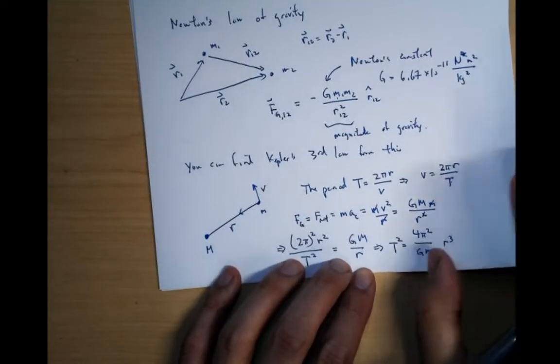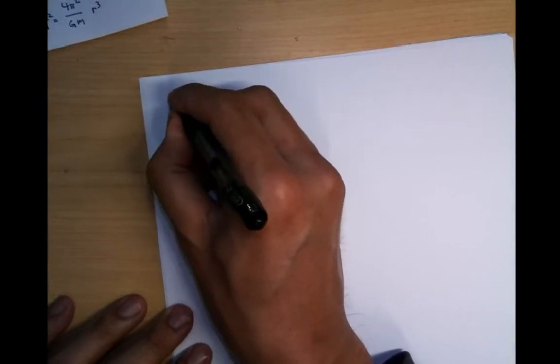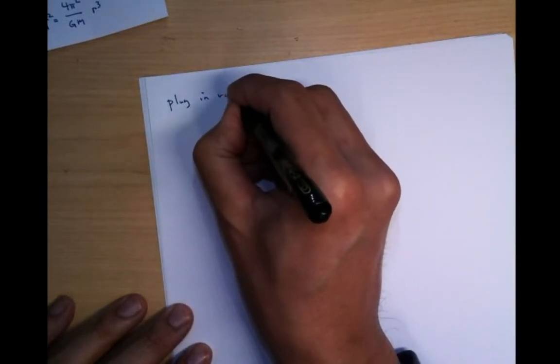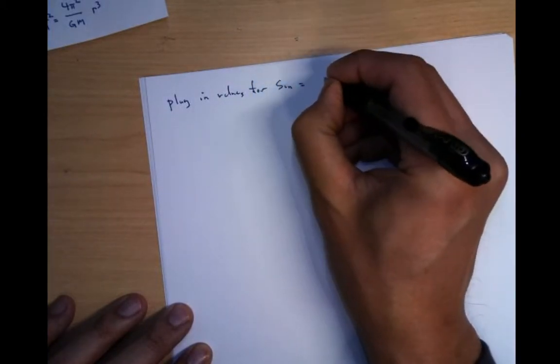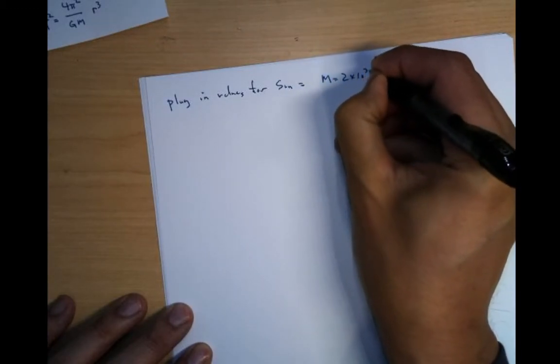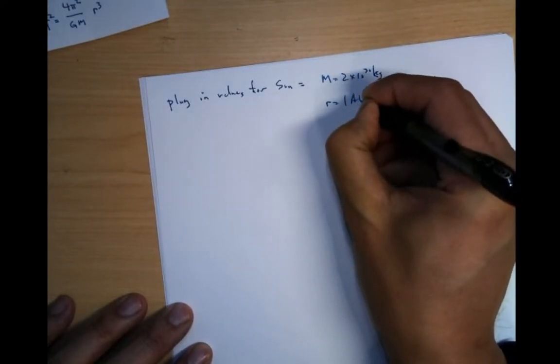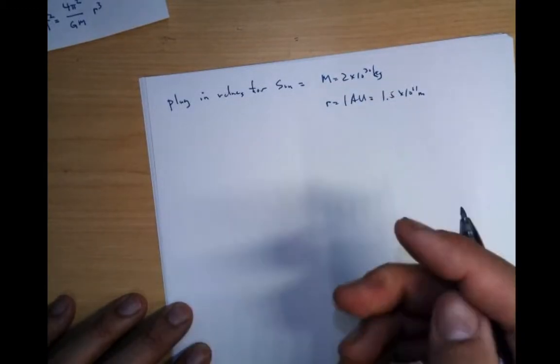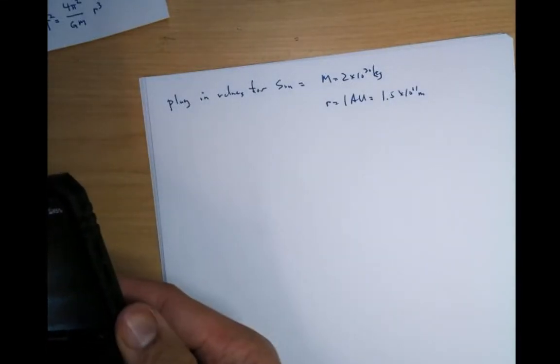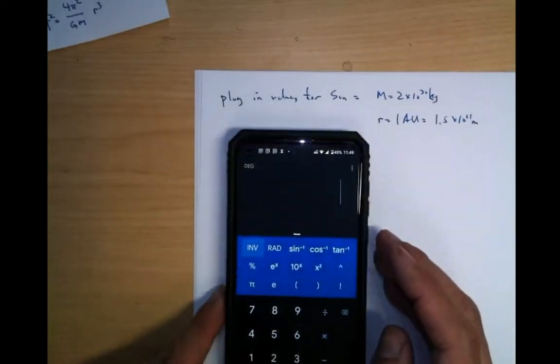So now we can go and plug in values for sun and stuff like that. So let's plug in values for sun which is M is equal to 2 times 10 to 30 kilograms. And then r is 1 AU is equal to 1.5 times 10 to 11 meters. You can just plug all those things in. Let me just do it real quick. This is not an ideal calculator for this sort of thing. But we can try it.